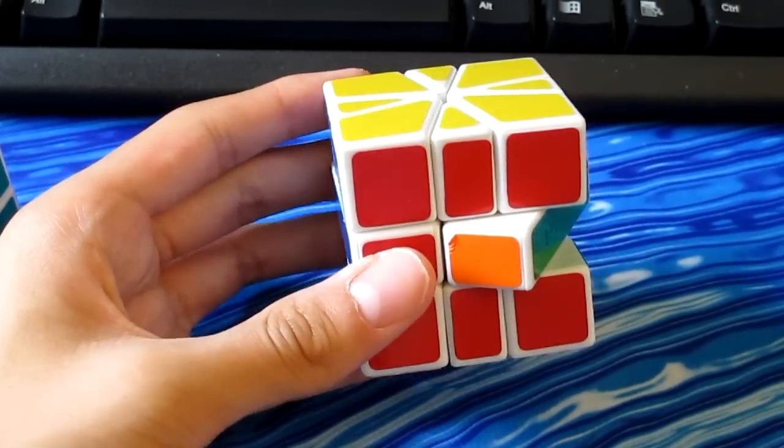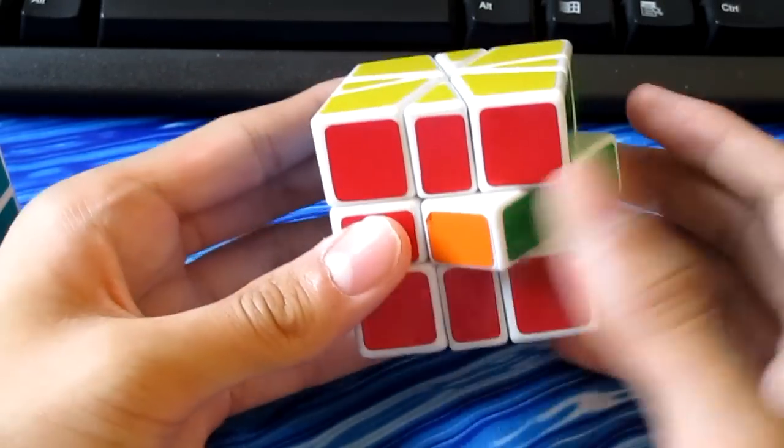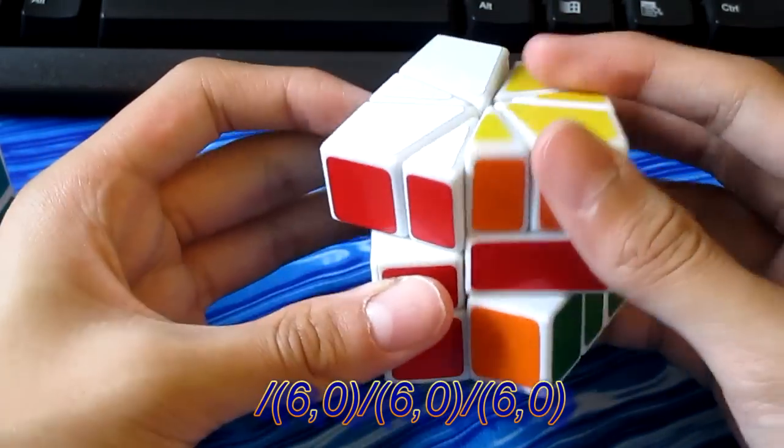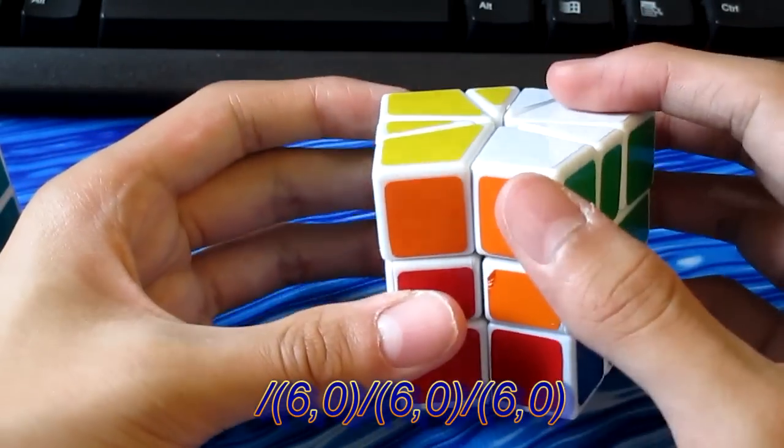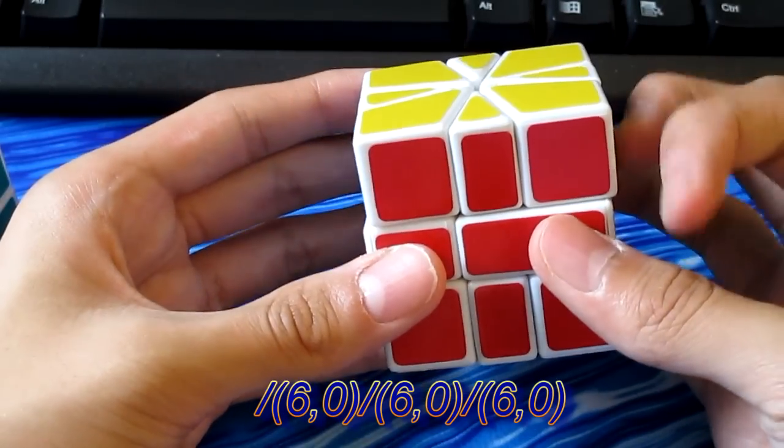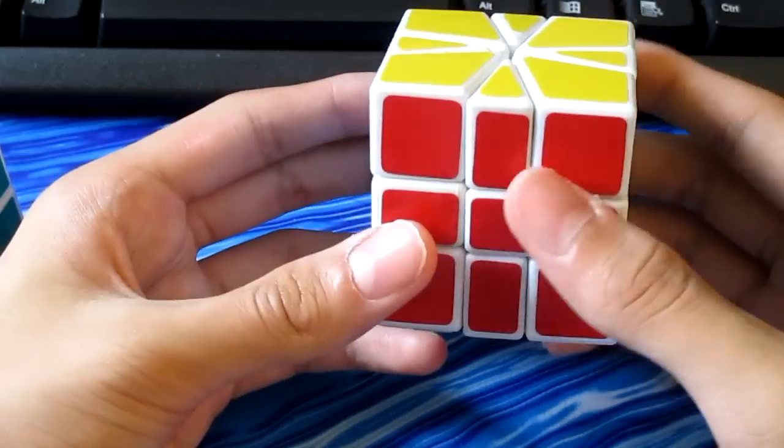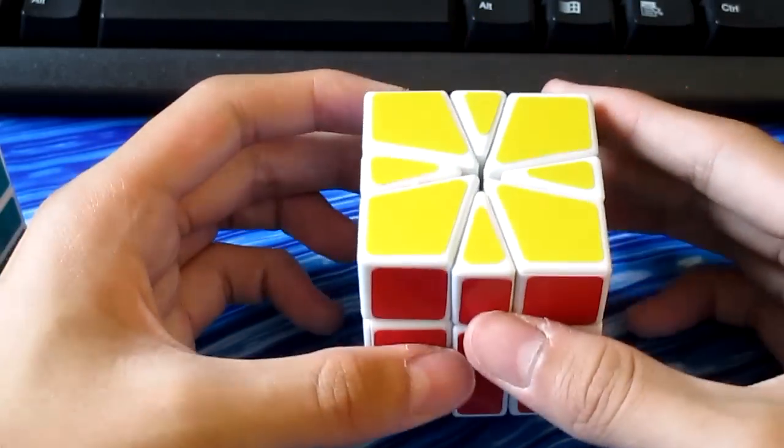Sometimes at the finishing, the middle layer will look like this. This is an easy fix: slash six slash six slash six. If you need to switch the layers, do so with the algorithm that I showed during corner permutation.